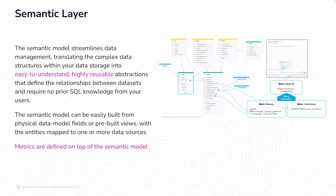We're going to start right with the semantic layer. The semantic model streamlines data management, translating the complex data structures within your data storage into easy-to-understand, highly reusable abstractions that define the relationships between datasets and require no prior SQL knowledge from your users. No-code, self-service analytics that is guided keeps everyone within the same space of semantic definitions and gives them the flexibility and freedom to explore within the defined rules. The semantic model can easily be built from physical data model fields or pre-built views with entities mapped to one or more data sources, and metrics are defined on top of the semantic model. On the right you'll see an example of the GoodData semantic layer with a data model and metric compositions on top.